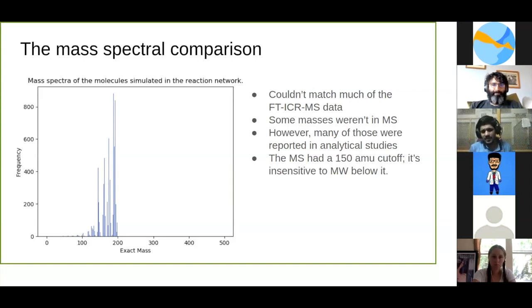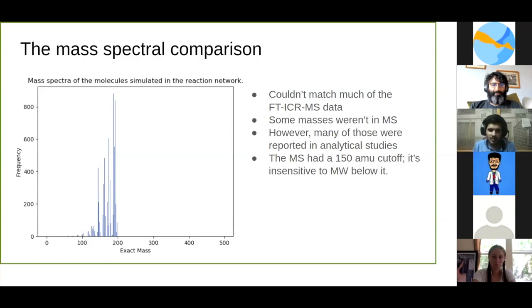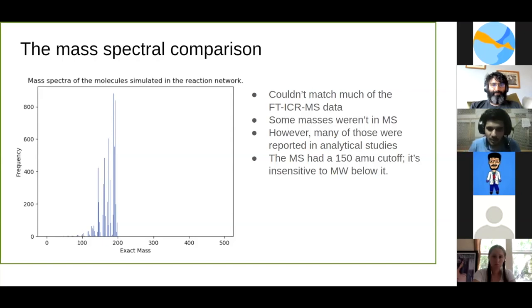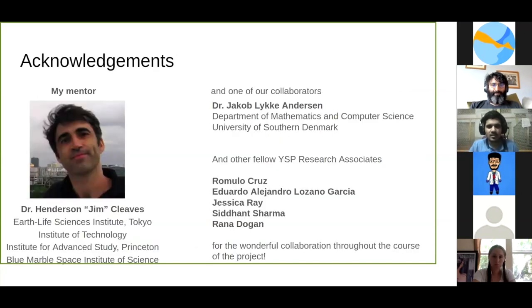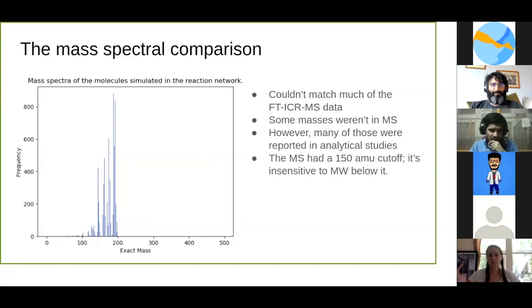That might be a pretty upsetting thing, but it turns out the problem is the computational expense. We plan to take this work forward. As I told you, the formose reaction might produce glucose, and we think that at some point the glucose degradation network and the formose reaction network may converge. I'll talk about that in a minute. That's pretty much all I have to say about the analysis that we did.